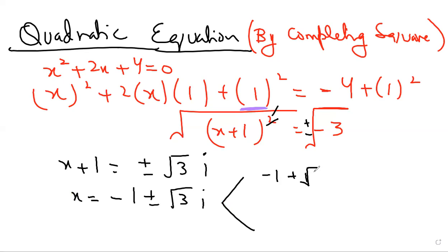The two solutions are minus 1 plus root 3 iota and minus 1 minus root 3 iota. The question has been solved. We needed to find the value of x and we have already found it.